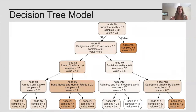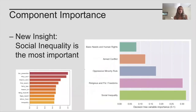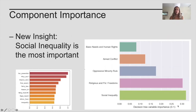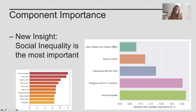It's still a fairly simple and interpretable model, and we can look at the different interactions which occur. The main insight is the variable importance: the most important predictive variable was social inequality, followed closely by religious and political freedom, then undemocratic or oppressive minority rule. Interestingly, all three of these perform better than the well-established predictors already in the literature, such as armed conflict and basic needs and human rights.